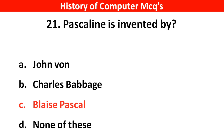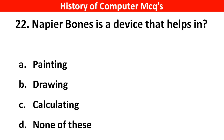Next question. Napier's Bones is a device that helps in — Options A: Painting, B: Drawing, C: Calculating, D: None of these. Right answer is option C, Calculating.